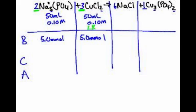So how much of this are we going to have go away? That's going to all go away since that's our limiting reactant. So that will be minus 5.0. And A — what's A stand for? After.